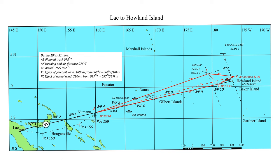Line XC is the effect of the actual wind, pushing them from the air position X to the supposed ground position C — 280 nautical miles in 10 hours 31 minutes, giving 27 knots from direction 097 degrees true. Track AC is the 6-degree north line: 6 degrees including the 2 degrees of drift in Noonan's calculations using the forecast wind, and 4 degrees of drift from the actual wind.